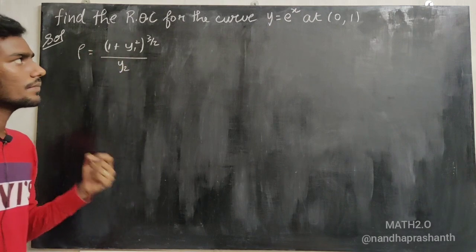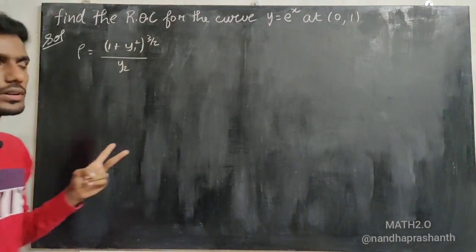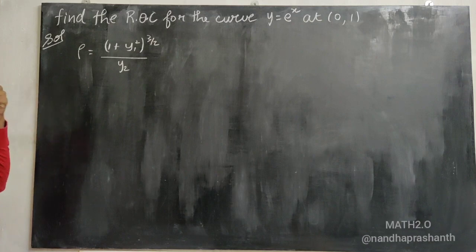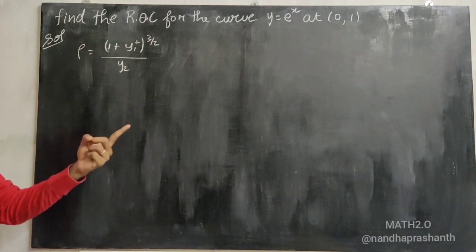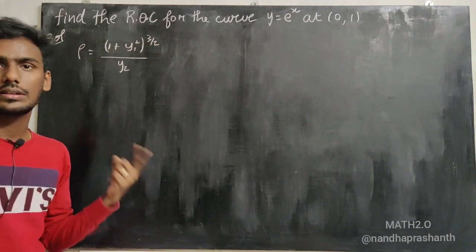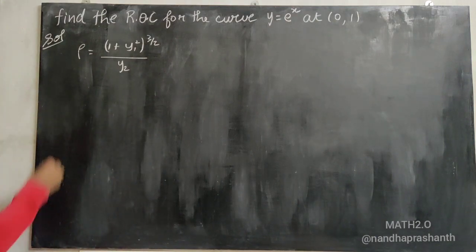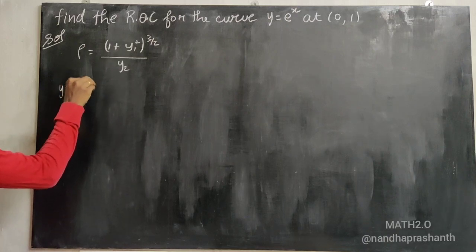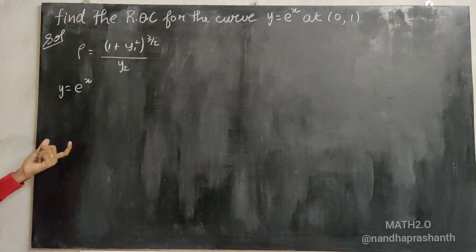Here, y₁ is the first derivative of the curve and y₂ is the second derivative of the curve. We need to find y₁ and y₂ at (0, 1). Given y = eˣ, we have to differentiate it.